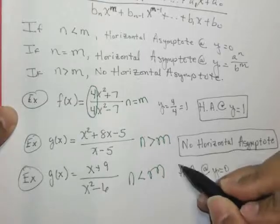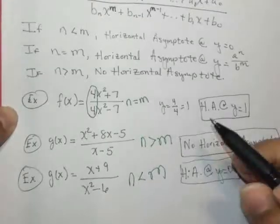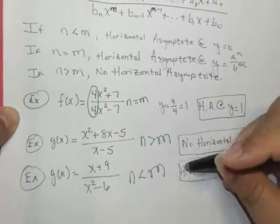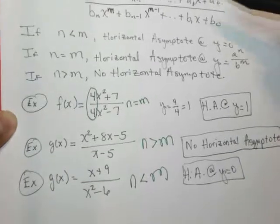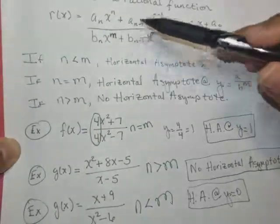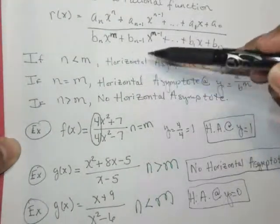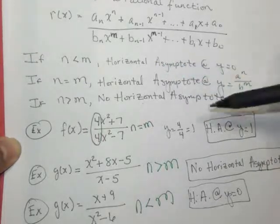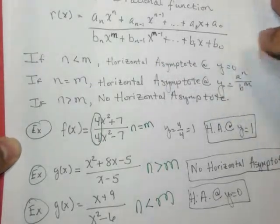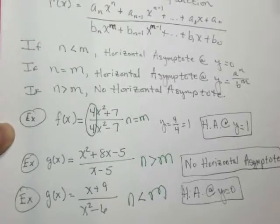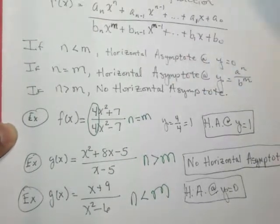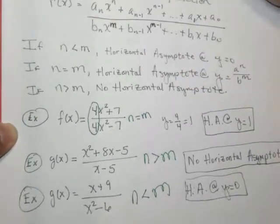So there we have it. A word on horizontal asymptotes. And really, it all boils down to what is a rational function and comparing the exponents of the leading coefficients. So not much to it for these examples. They're fairly straightforward. Just be sure you keep referring back to this until you've memorized it.